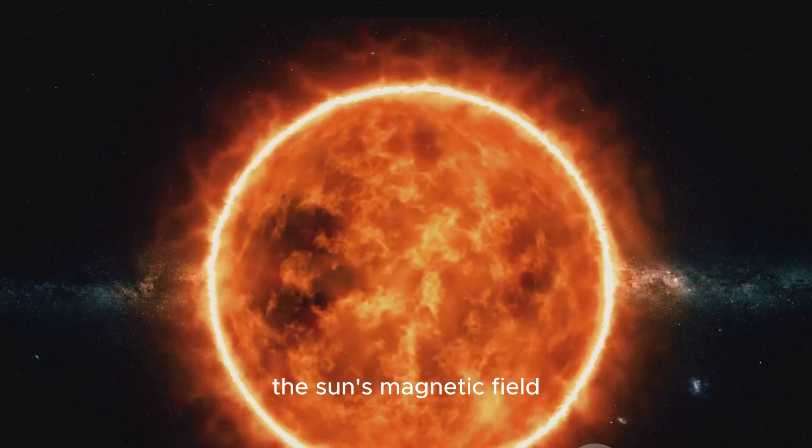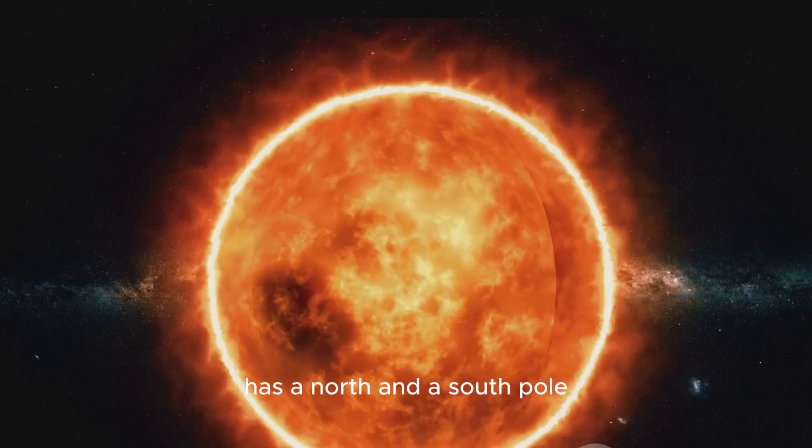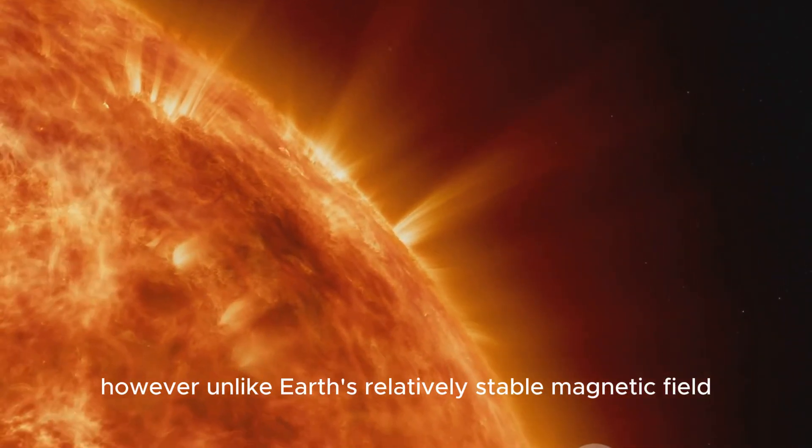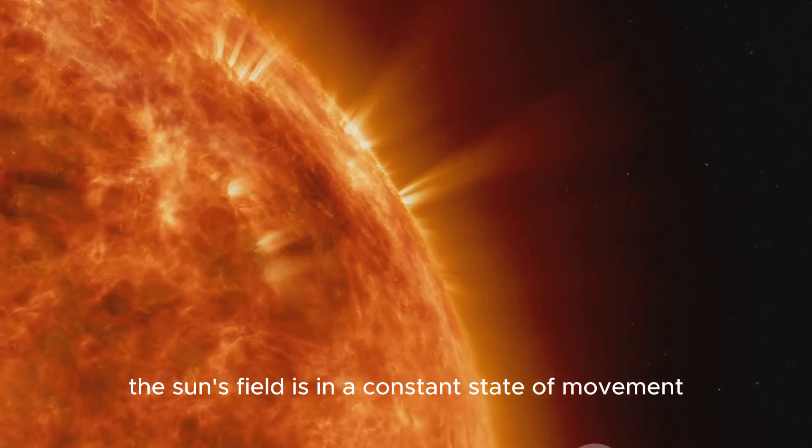Picture this. The sun's magnetic field, just like Earth's, has a north and a south pole. However, unlike Earth's relatively stable magnetic field, the sun's field is in a constant state of movement.